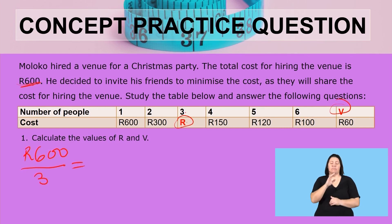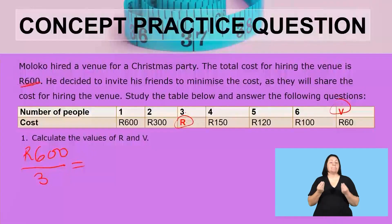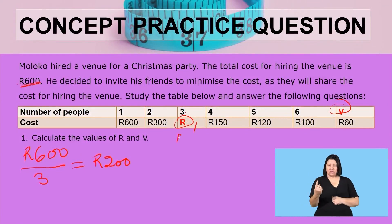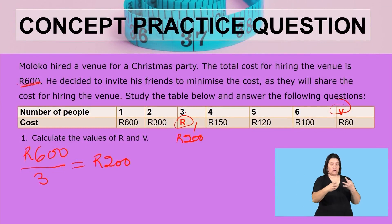Let's press the calculator together: 600 divided by three. Therefore, we get 200 rent. Each one of them will pay 200 rent.